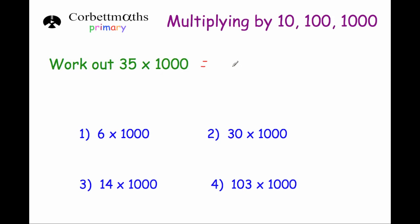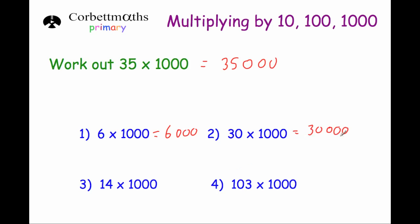So 35 times 1000: write 35 and add three zeros — the answer is 35,000. 6 times 1000: write 6 and three zeros — 6,000. 30 times 1000: write 30 and three zeros — 30,000. 14 times 1000: write 14 and three zeros — 14,000. And 103 times 1000: write 103 and three zeros — the answer is 103,000.